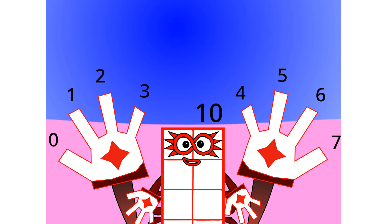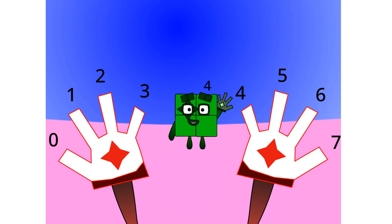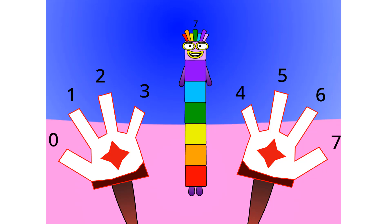Oh wow. Looks like I am no longer octoblock, but I am still called 8. This base has 8 digits: 0, 1, 2, 3, 4, 5, 6, and 7. Let's count in octal: 1, 2, 3, 4, 5, 6, 7, 8.